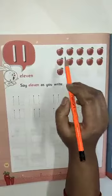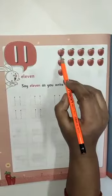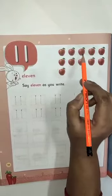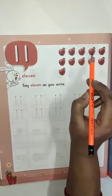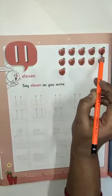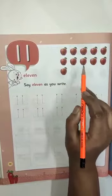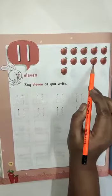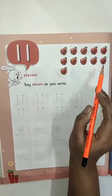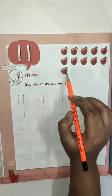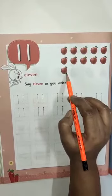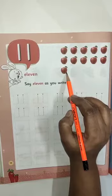Count these apples: 1, 2, 3, 4, 5, 6, 7, 8, 9, 10, 11. These are 11 apples.